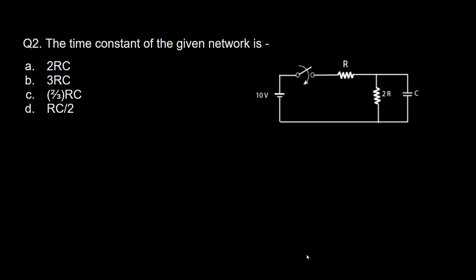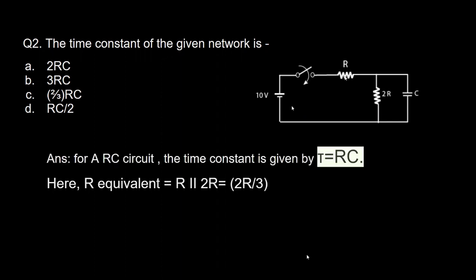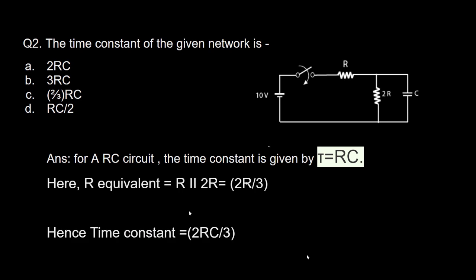To calculate the time constant, we need the equivalent resistance. For calculating the equivalent resistance, the voltage source is replaced by a short circuit. The capacitors are in parallel, so the time constant is simply 2R/3 into C. Therefore the answer is 2/3 RC.